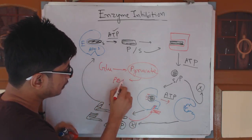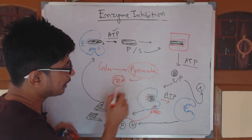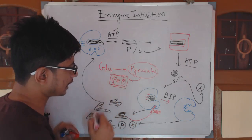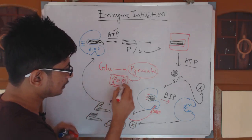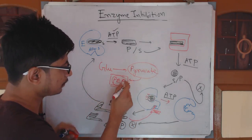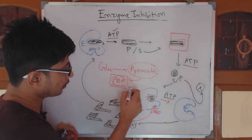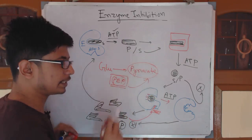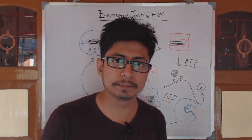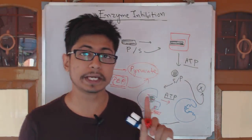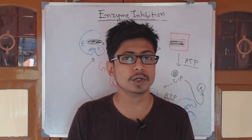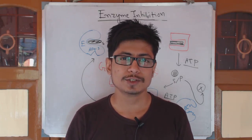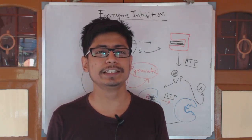The conversion of phosphoenolpyruvate to pyruvate is a unidirectional process, and its enzyme activity is controlled by the pyruvate concentration itself. These are the important aspects of feedback inhibition, which plays a vital role in controlling the production of certain products via enzymatic reactions.